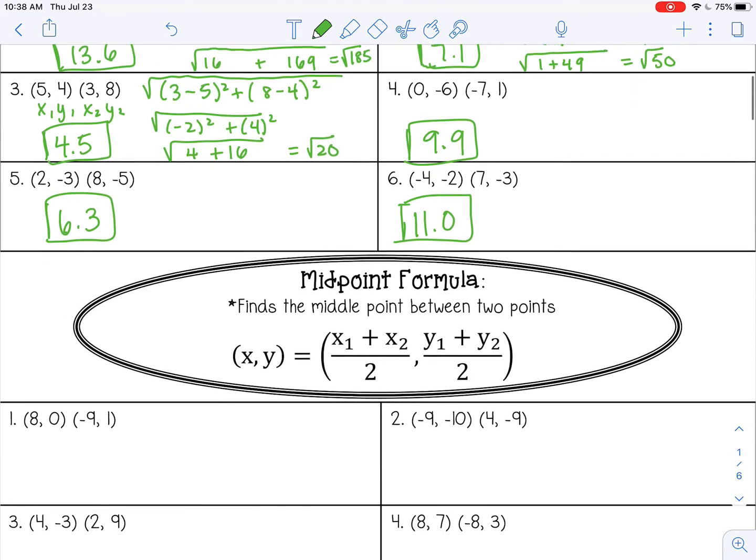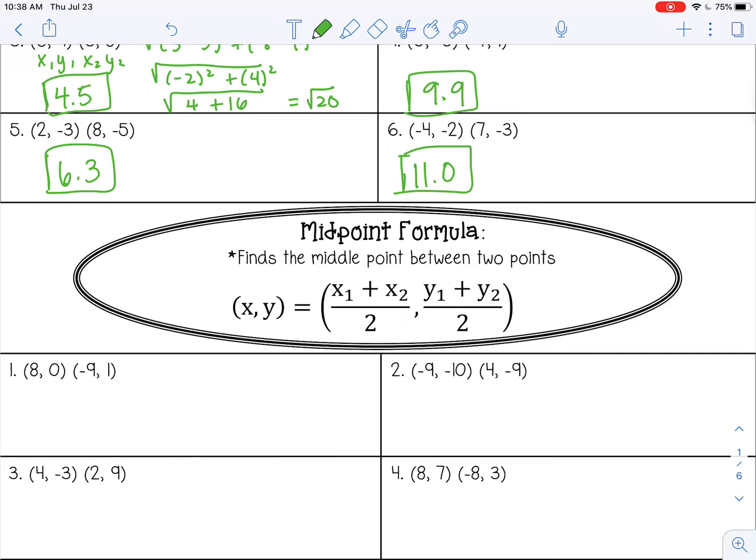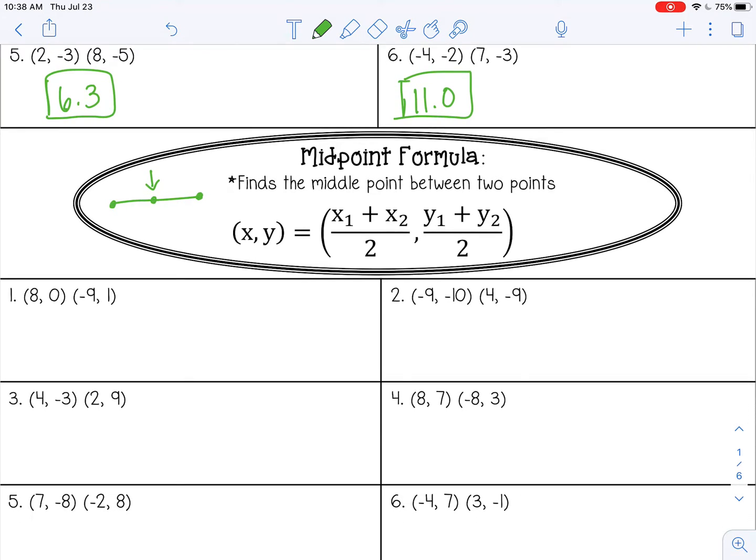Let's try the midpoint formula now. So the midpoint formula finds the middle point between two points. So if you have a line segment, the midpoint would be the point right in the middle of those two endpoints. And the formula is given below. So let's try one, x1, y1, x2, y2.